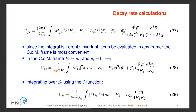Here is the expression for Γ we've arrived at. Since this integral is Lorentz invariant, we can evaluate it in any convenient frame. For example, we can take the center-of-mass frame, where the initial energy equals the mass of the initial particle and the initial momentum equals zero. Therefore this integral takes the following form.